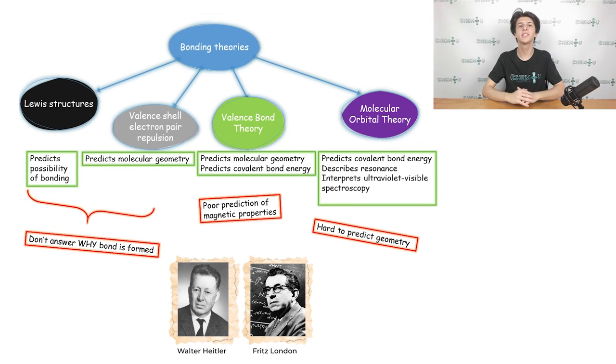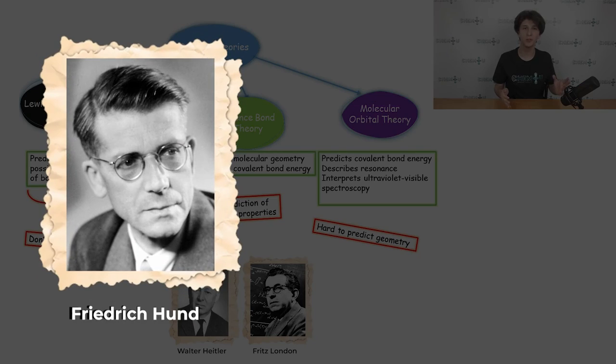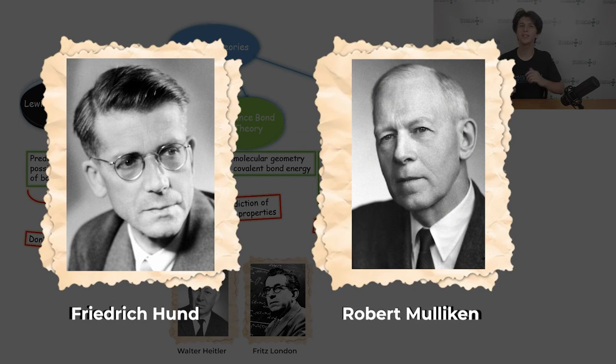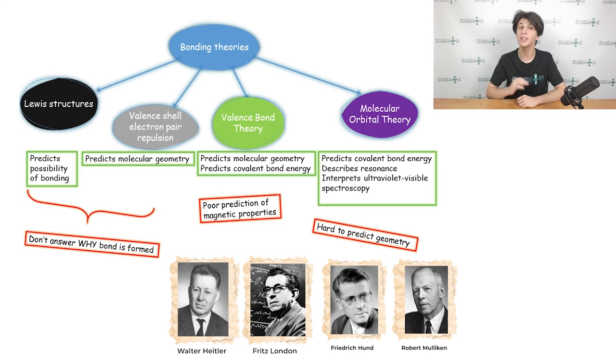However, there exists another theory, which we will discuss in the next lectures. This theory further describes the concept of bonds between atoms and molecules. It is referred to as the molecular orbital theory. It was developed by chemists Friedrich Hund and Robert Mulliken. Today, this theory is considered to be the most widely accepted one in quantum chemistry. So, let's begin.